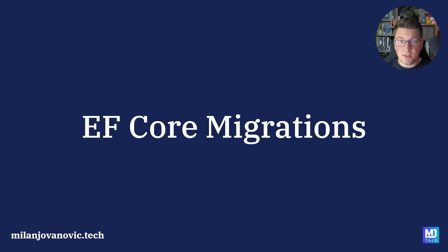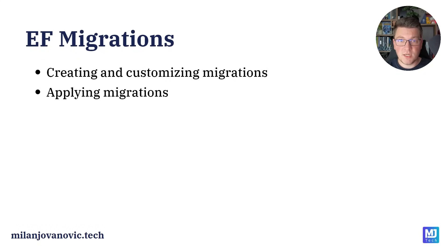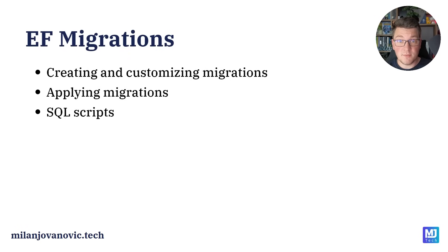EF Core migrations is an awesome tool that allows us to implement database schema versioning. We can describe our data model with C# code, and then EF Core is able to convert this into a respective database migration. We can then take this database migration and apply it on our SQL database. As part of this video, we are going to explore creating and customizing database migrations, the various ways of applying migrations on a production database, how to generate SQL scripts from EF Core migrations, and some external tools for managing database migrations.